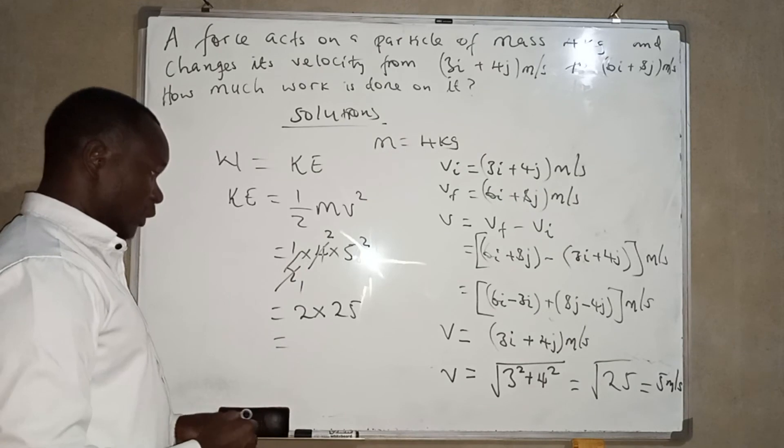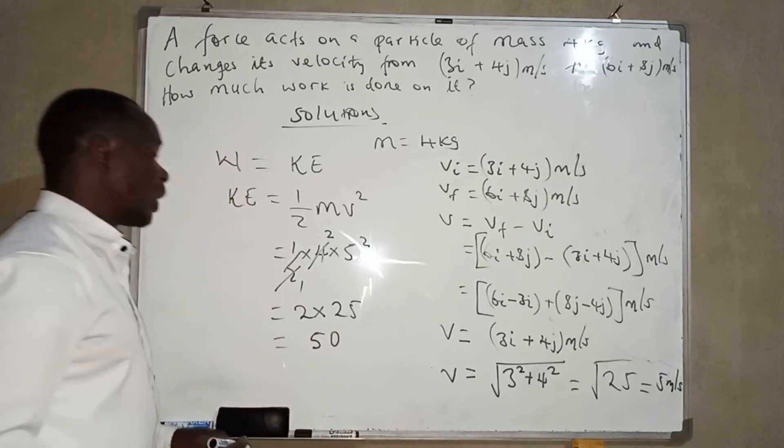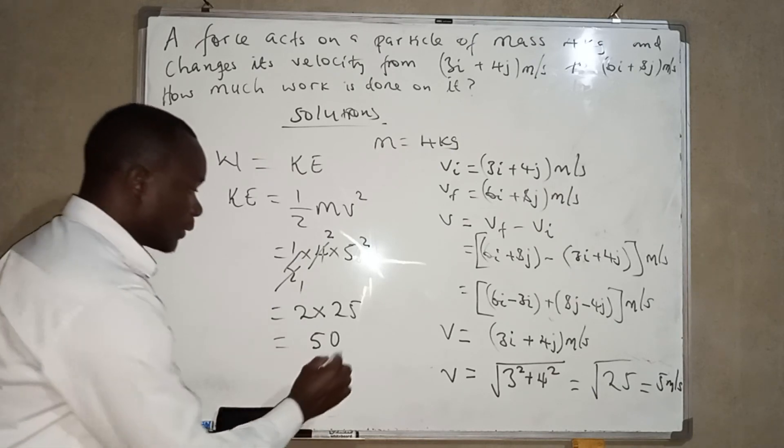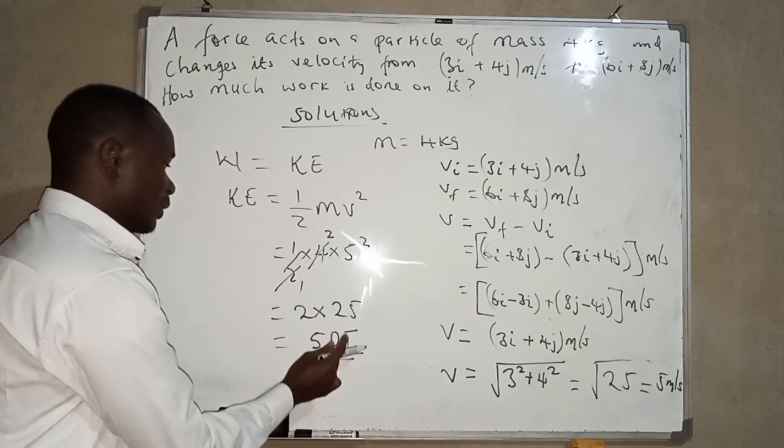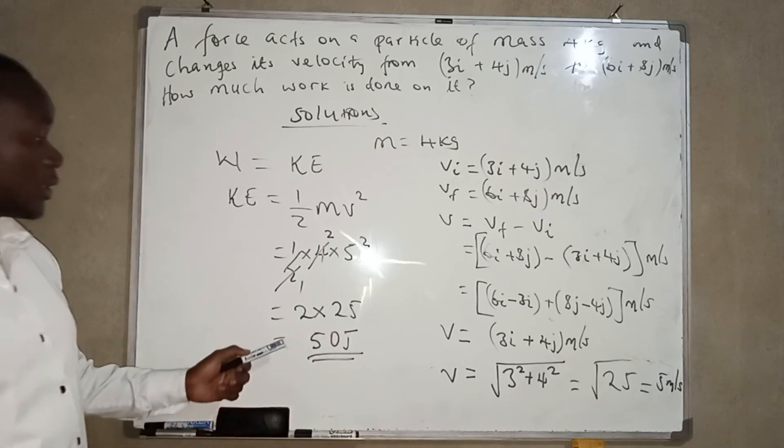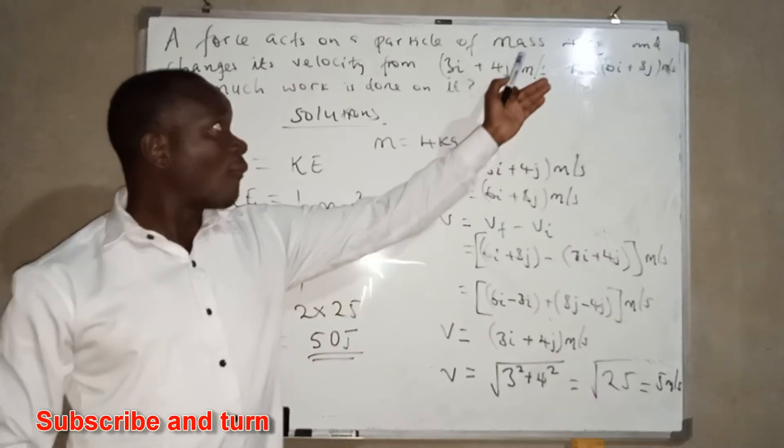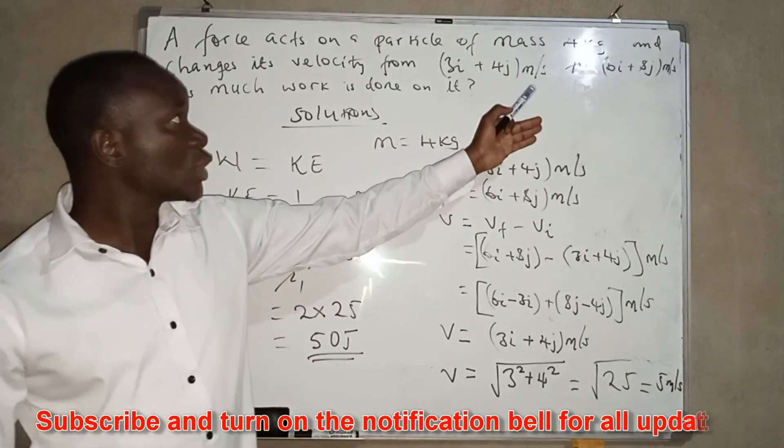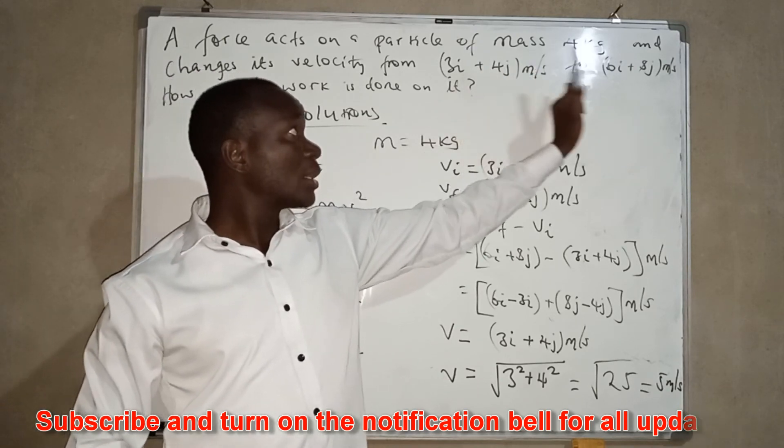From this, we're going to have 2 times 25, we are going to have 50, and the units for energy, this is joules. So 50 joules is the amount of work that must be done in changing the velocity of 4kg mass from this to this.